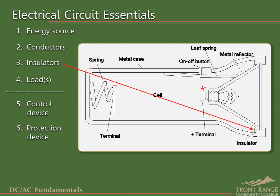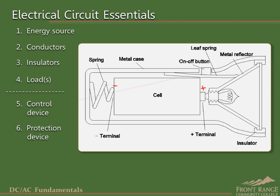The circuit also contains insulators to prevent current from going where we don't want it to go, which would cause the flashlight to malfunction. Our circuit contains one load in the form of a light bulb, which converts electrical energy stored in the battery into light energy, and also some heat energy. This circuit also includes a switch as a control device, but it does not have a protection device.